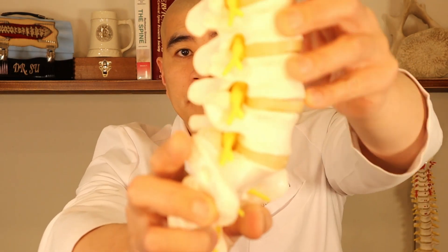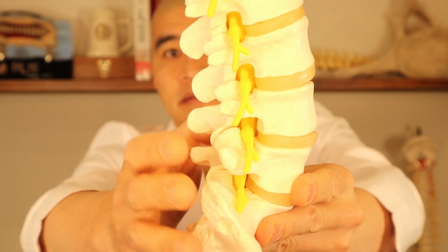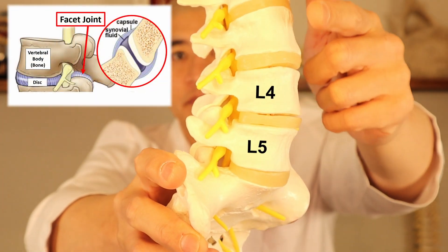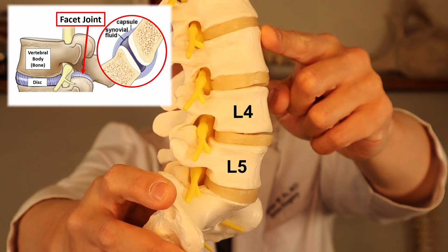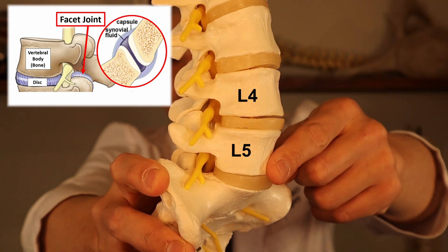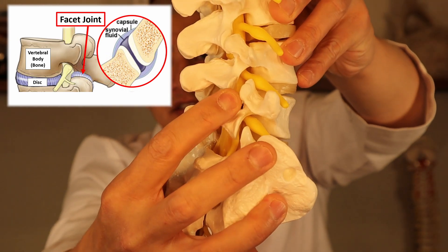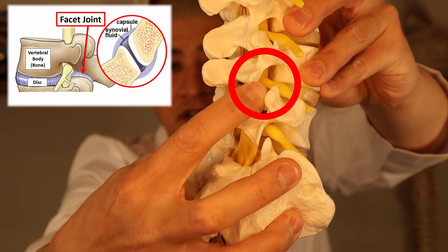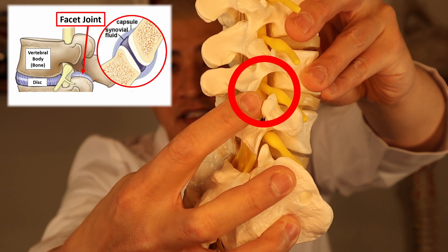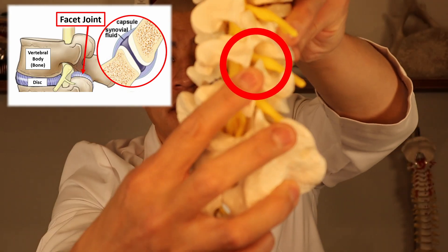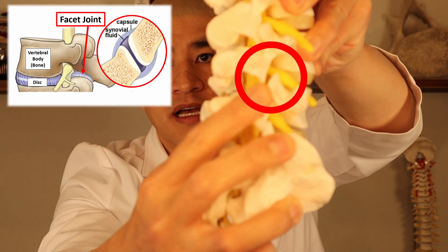First, to understand what that is, you have to understand what the lumbar facet is. This is your low back — there's the back of your spine and the front of the spine. The spine is composed of bones, and in between the bones at the front of the spine there are discs, which are the cushion between the bones — those are the shock absorbers. In the back of the spine you don't have discs, but you have a little joint that connects each of the bones, and as you flex forward and backwards, this little joint opens up and closes down.